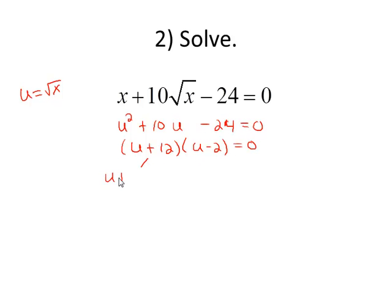Our first solution from u plus 12 equals 0 is u equals negative 12. From the second equation, u minus 2 equals 0 will give us u equals 2.